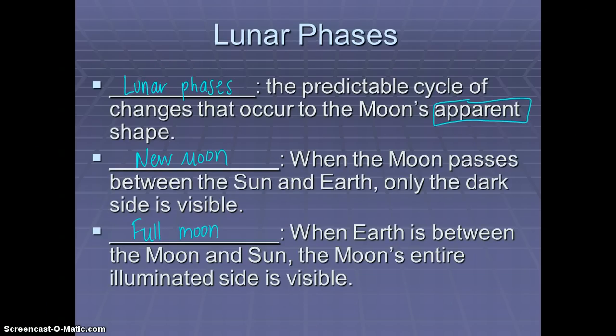Lunar phases are the predictable cycle of changes that occur to the Moon's apparent shape. I have circled the word 'apparent' because we remember that the Moon's not actually getting smaller or bigger—it's just covered with a shadow more or less of the time.